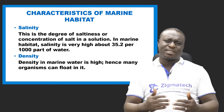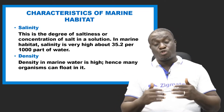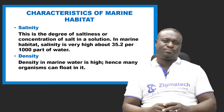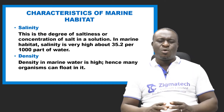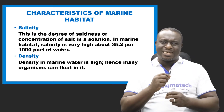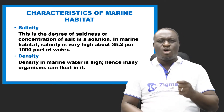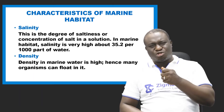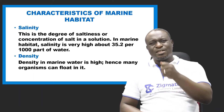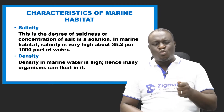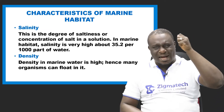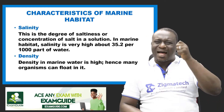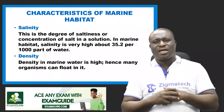Let's look at some characteristics of marine water habitat. Number one is salinity — the degree of saltiness or concentration of salt in a solution. In marine water habitat, salinity is usually high, which is why we call it saltwater habitat. Another characteristic is density — marine habitat has very high density, which is why most organisms can float there.